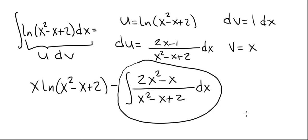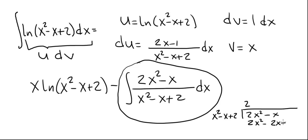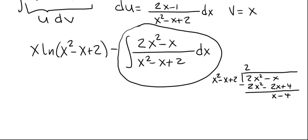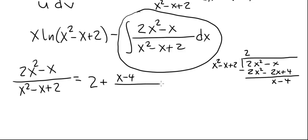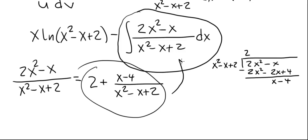Remember that we have to perform long division first. So we take the polynomial in the numerator, 2x squared minus x, and divide by the polynomial in the denominator, x squared minus x plus 2. That gives us a 2. This is 2x squared minus 2x plus 4, and we subtract the second line from the first, giving us x minus 4 as the remainder. So 2x squared minus x divided by x squared minus x plus 2 equals 2 plus x minus 4 over x squared minus x plus 2.